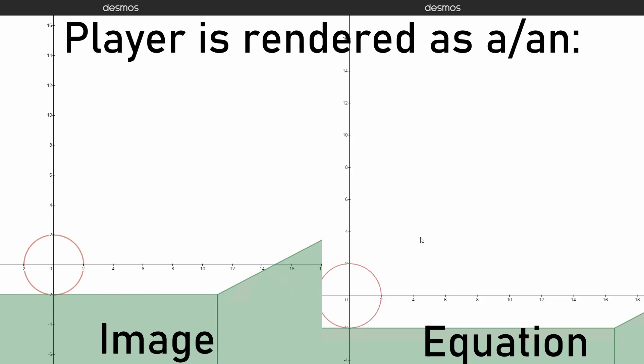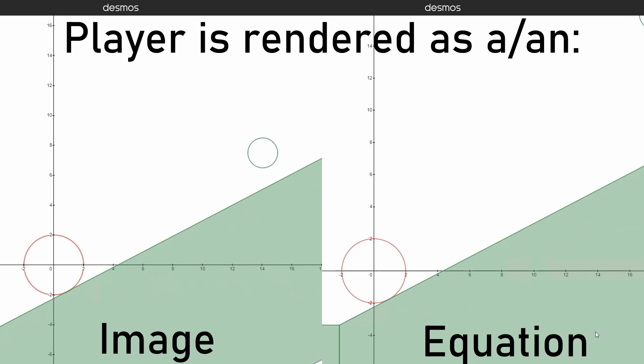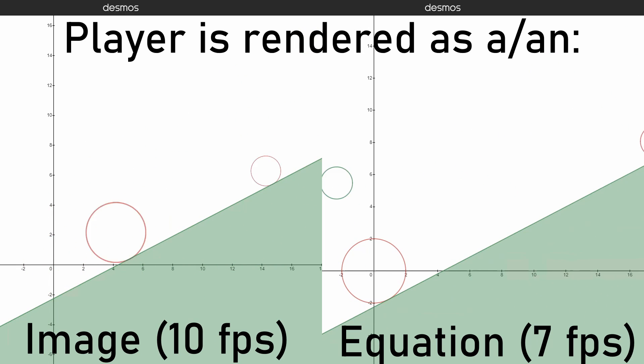Let's do a performance test. Level 3 is good because of how many circles are on screen at once. That was a pretty clear win for the images.